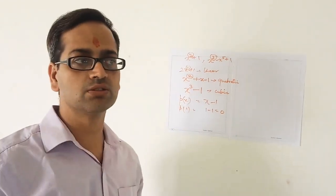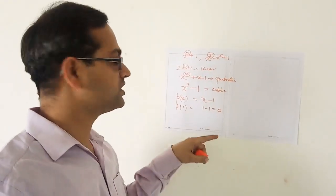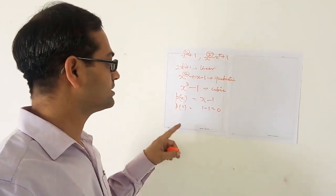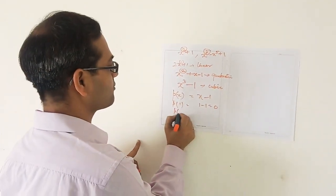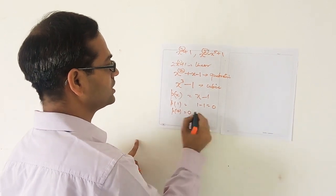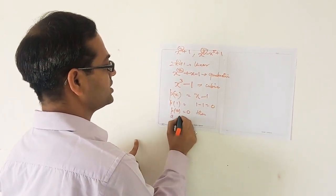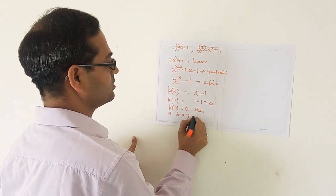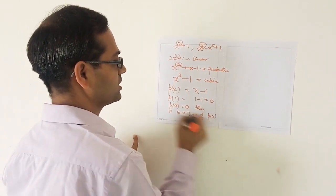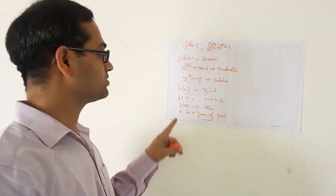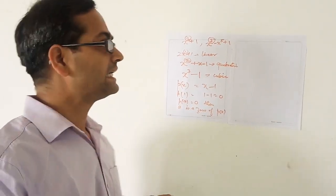So p(1) = 0. Since p(1) = 0, the number 1 is said to be a zero of the polynomial. Similarly, for any number a, if p(a) = 0, then a is a zero of p(x). This is the meaning of a zero of a polynomial.